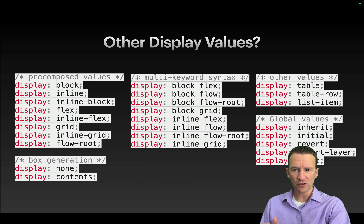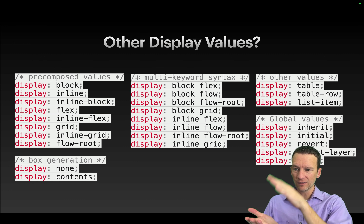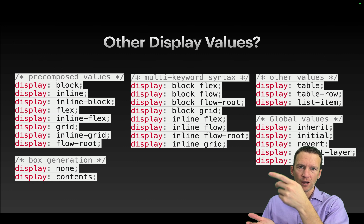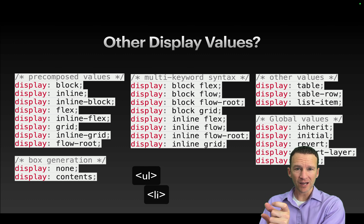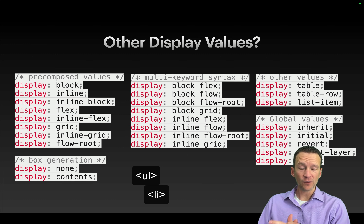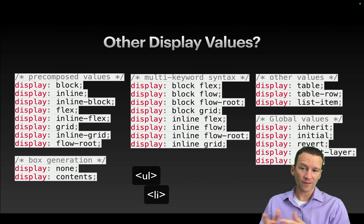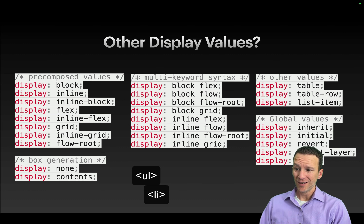Same thing with display list-item. Typically when you want a list, you'd use an unordered list with ul or ol and li elements. But if you wanted a div tag to have a bullet or number, you could set it to display list-item.